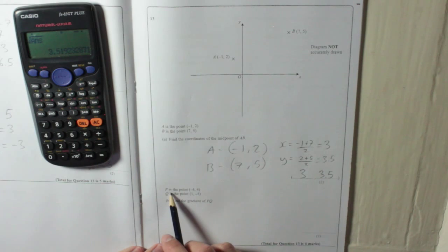Now, P, so two new points. P is the point minus 4, 4. Q is the point 1, minus 5. Find the gradient of PQ.